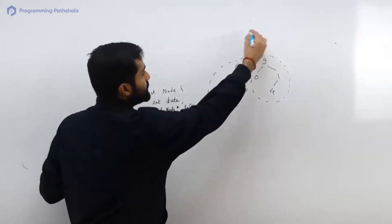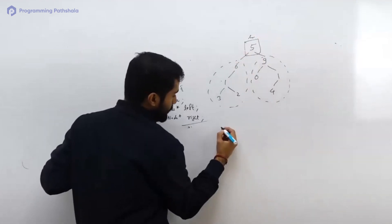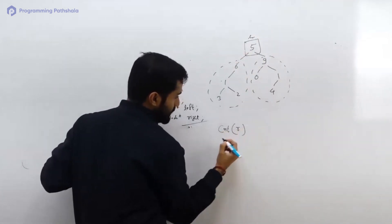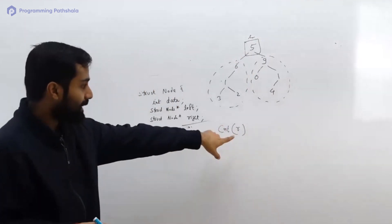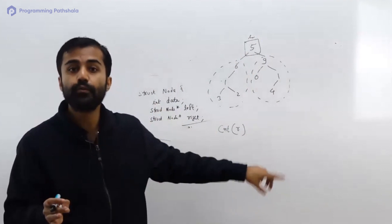Think of it in this manner: this is a tree rooted at this root r. So let's say I have a function count, count of r. This count of r will tell me how many nodes are present in the tree whose root is r.